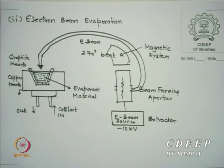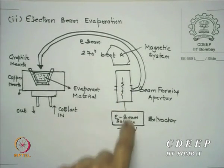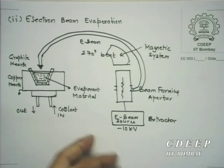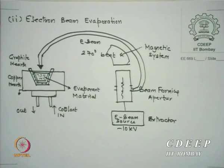Beam bending is essentially because of the Lorentz force, V cross B. The accelerated beam doesn't need very large energy — 10 keV energy is all that is needed. Typically, the energy used in electron beam evaporation is 5 keV, but the source can normally go up to 10 keV.